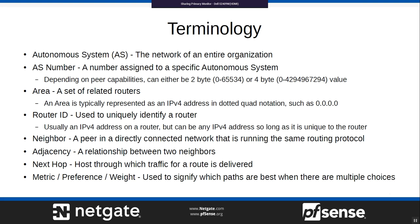A neighbor is a peer in a directly connected network running the same routing protocol. If you're both running BGP on the same segment, you're neighbors. An adjacency is the relationship between two neighbors — not just that you're neighbors, but that you've made a connection and are actively exchanging routing information.